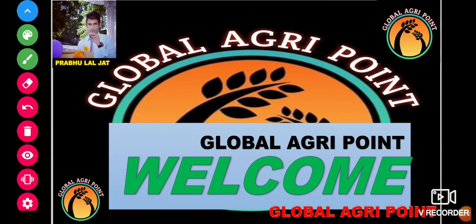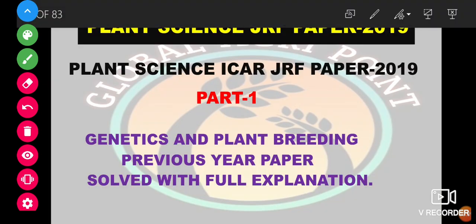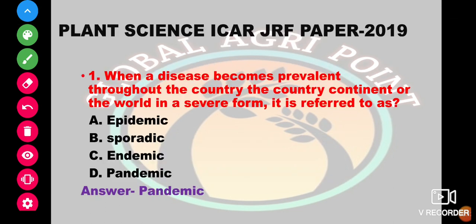Hello guys, once again welcome to the Global Agree Point review. Here I am with the last year plants and GRF paper. Let's start the paper. First question: when a disease becomes prevalent throughout the country, continent, or the world in severe form, it is referred to as epidemic, pandemic, endemic, or pandemic. The answer is pandemic.